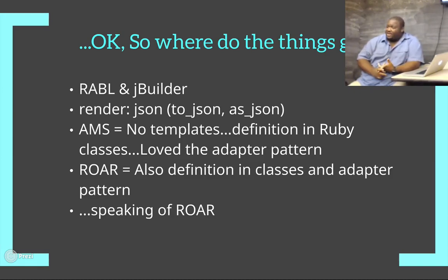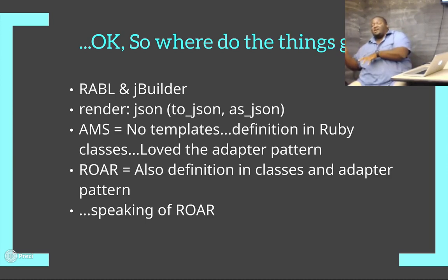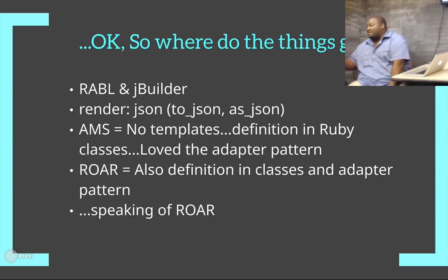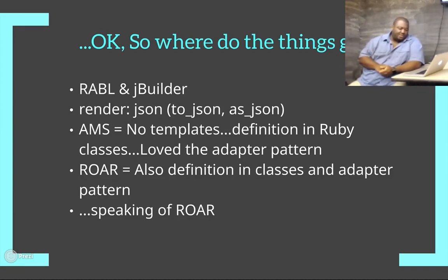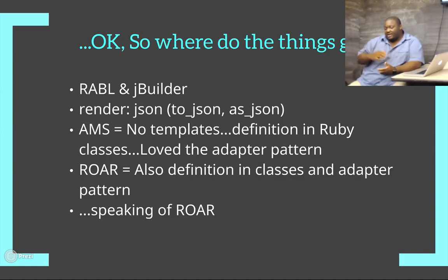I love the fact that Active Model Serializers has an adapter pattern — so if we decide JSON-API is crap, we want to go to JSON-HOW or write our own adapter, you could do that. I love the flexibility there. But honestly, it wasn't as mature as I wanted it to be. There wasn't enough out there for what I needed.